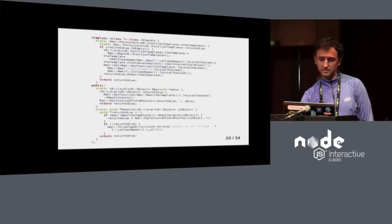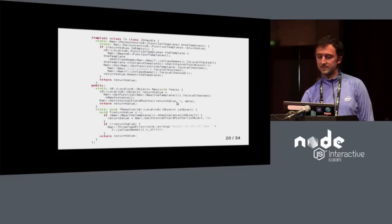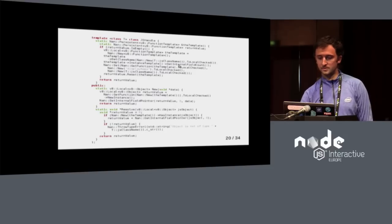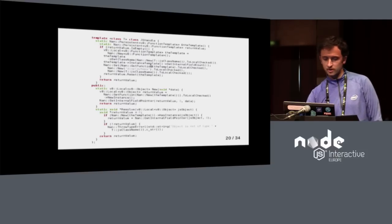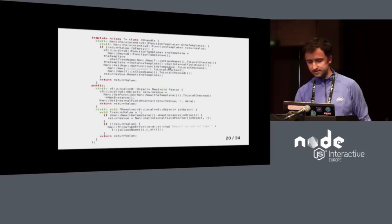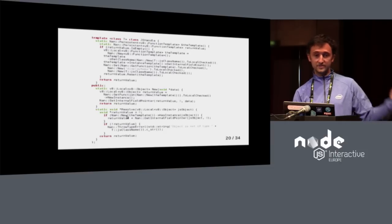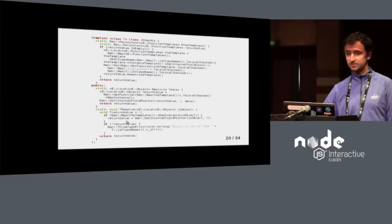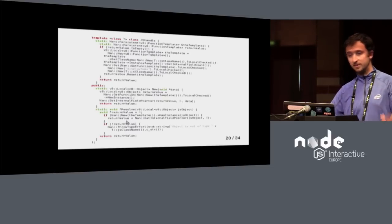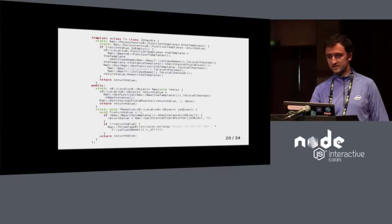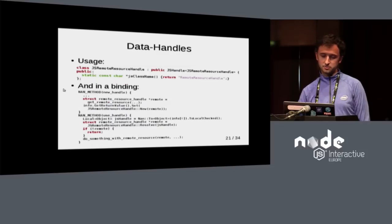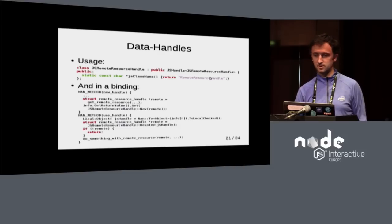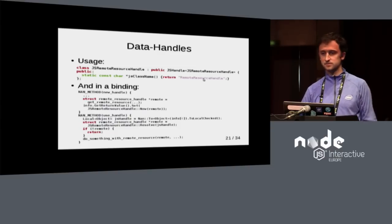You instantiate the new JavaScript class; when somebody says new, you create a new instance and store the native handle inside using setInternalFieldCount, which NAN wraps for you. The resolve function gives back your native handle, or if it's not there, throws an exception saying this is a stale object — which informs programmers they did something out of sequence, like closing a file and then trying to write to it. In the debugger it will say 'remote resource handle', not just 'object', so people know what handle leaked.